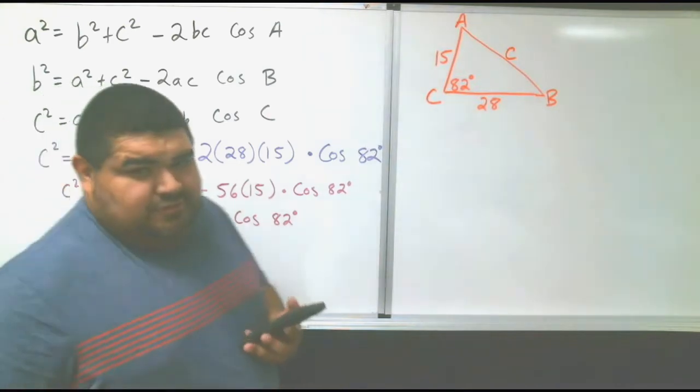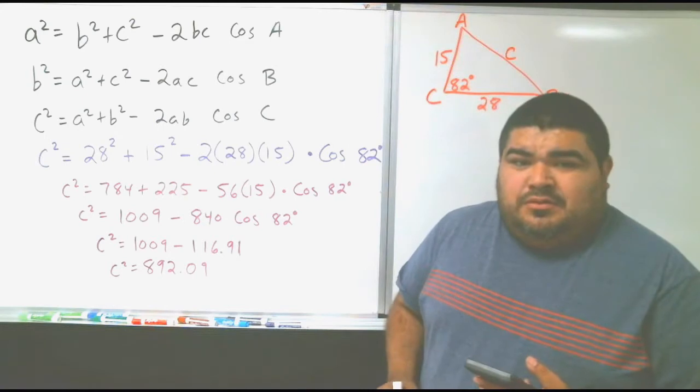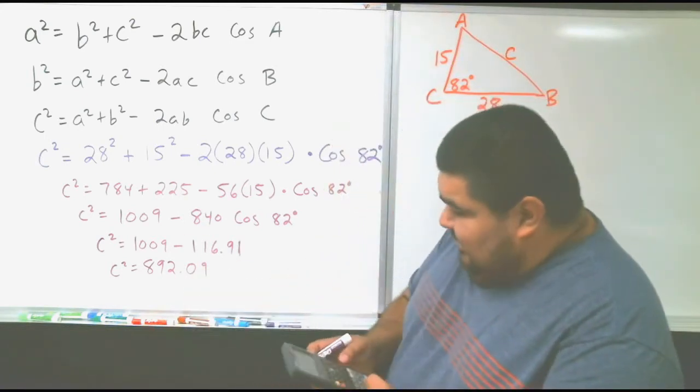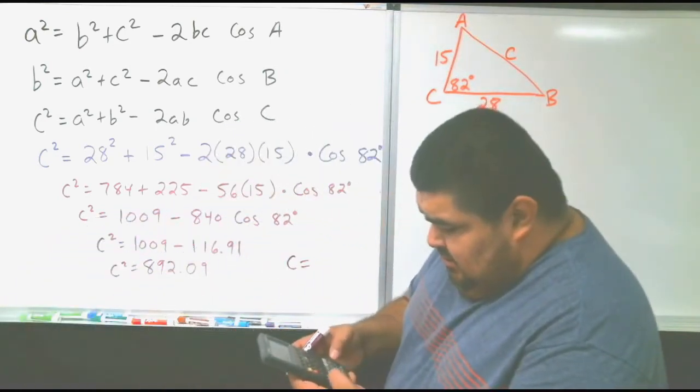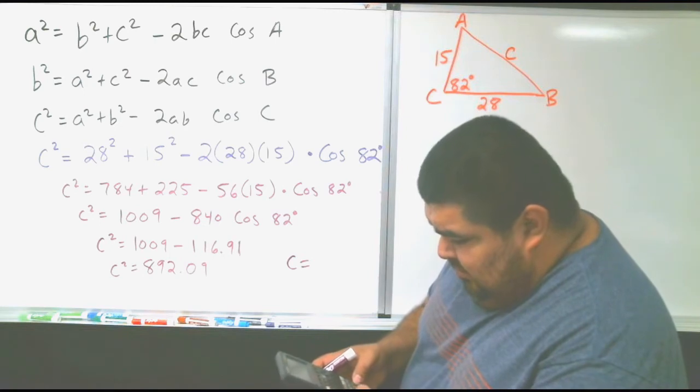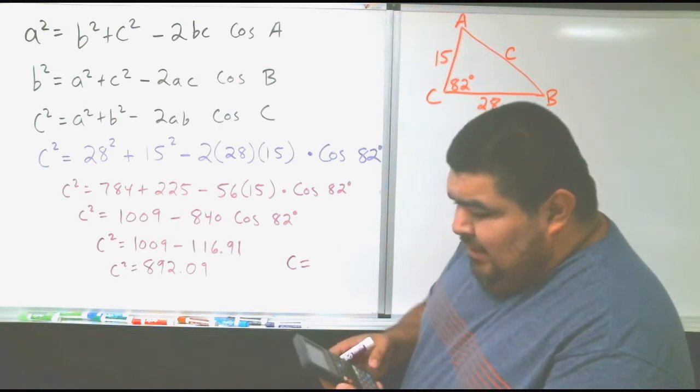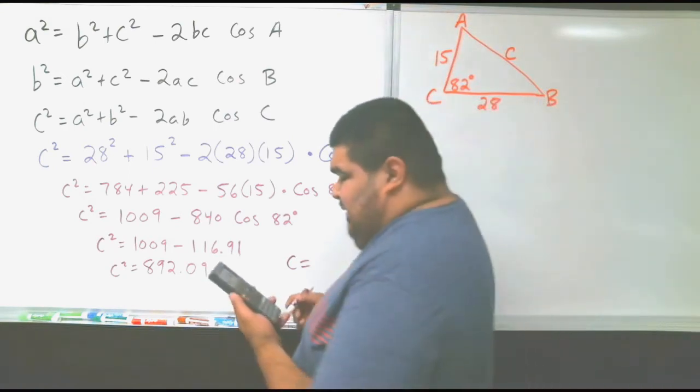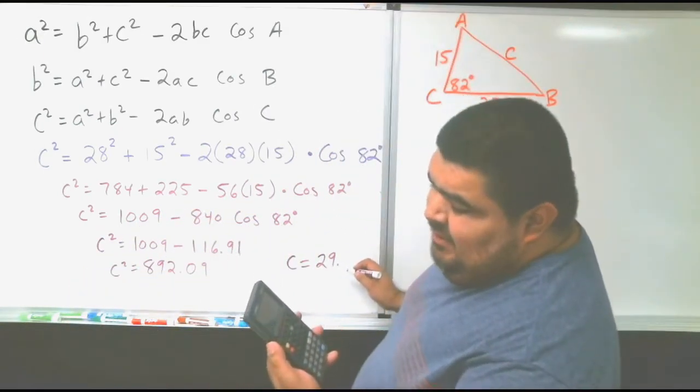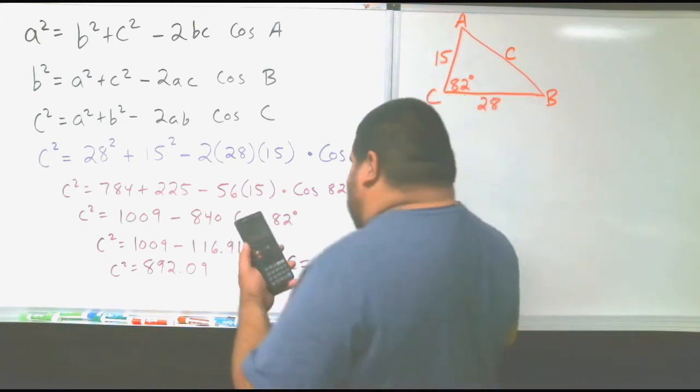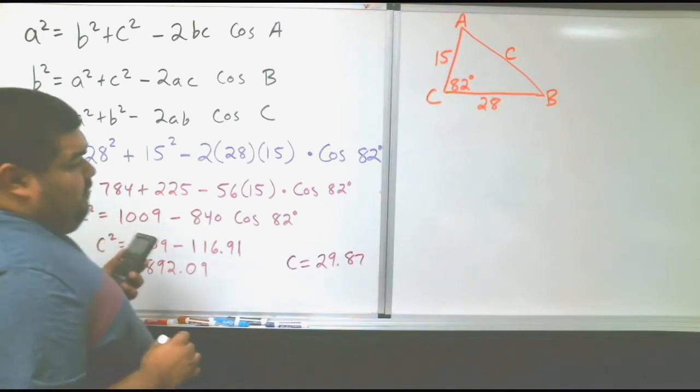So now we have C squared equals 1009 minus 116.91, which equals 892.09. Since we are solving for C, remember we have a square, so we have to get rid of the square by doing a radical. So C equals, once we do the radical, we have shift radical of 892.09 equals 29.86. So that means the side is 29.87.